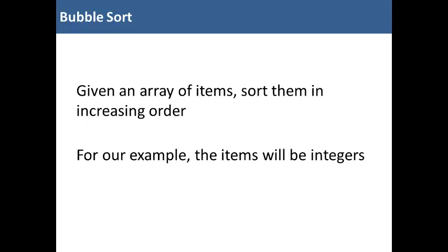So given an array of items, the bubble sort will sort them in increasing order. The items could be integers, strings, whatever. For our example, we'll just use a simple short list of integers.